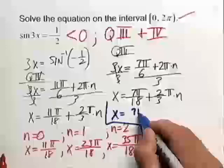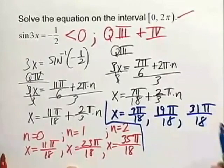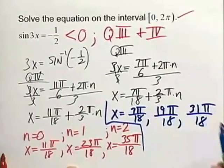we end up with values of 7 pi over 18, 19 pi over 18, and then also 31 pi over 18. So these are the six solutions in the interval from 0 to 2 pi of the trig equation sine of 3x is equal to negative 1 half.